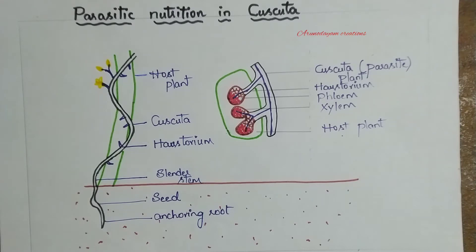Heterotrophic nutrition has different types, and parasitic nutrition is one type of heterotrophic nutrition.